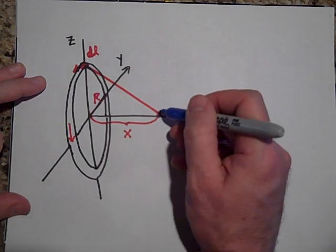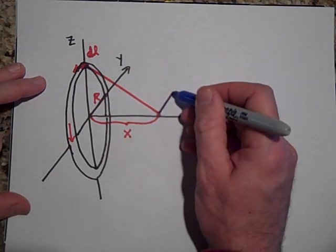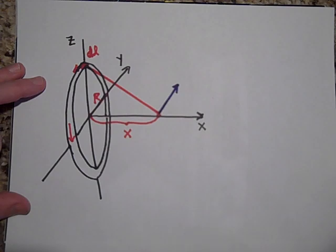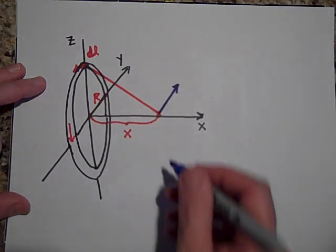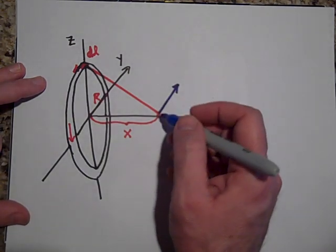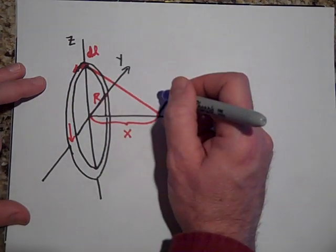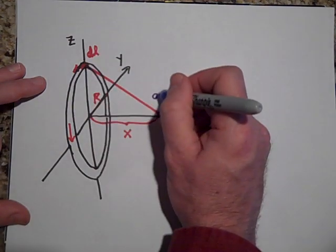It's going to be at a right angle to this. So it's going to be like that. Okay, now that's going to be... we're going to call that the magnetic field just due to that DL. So that's going to be a dB.